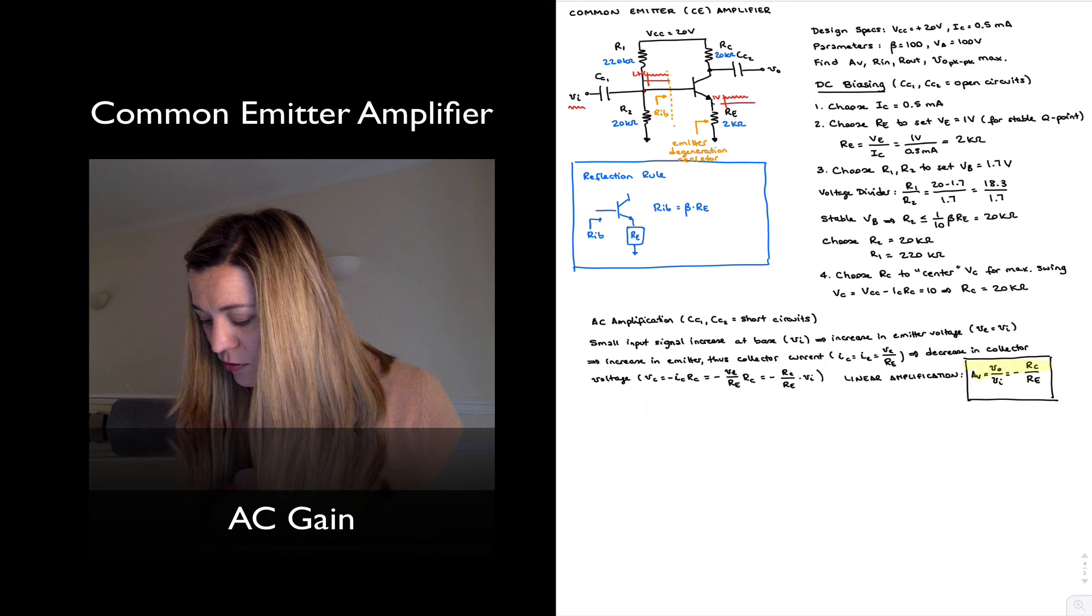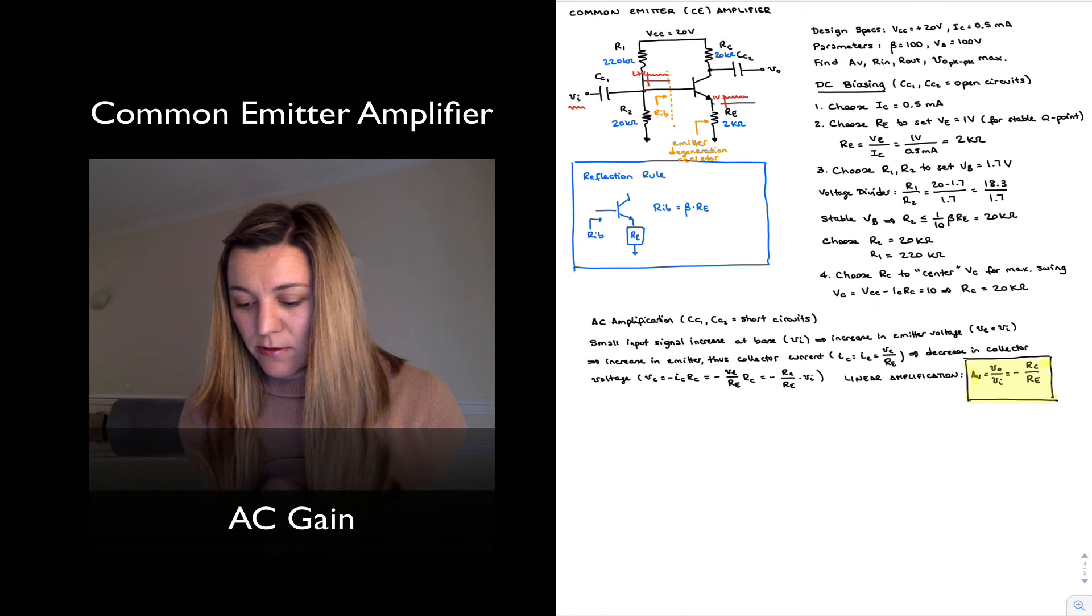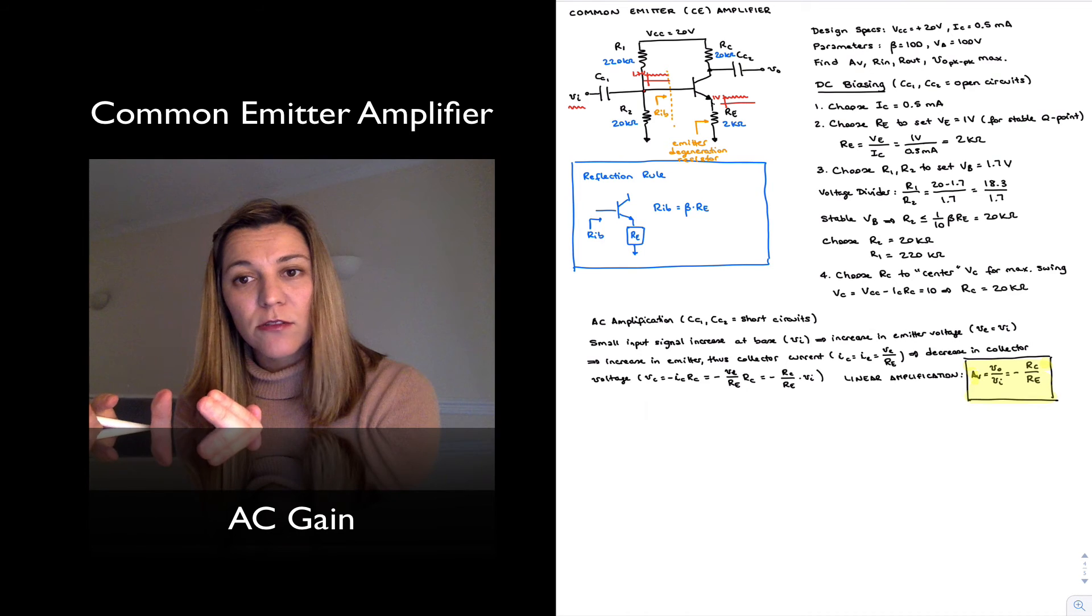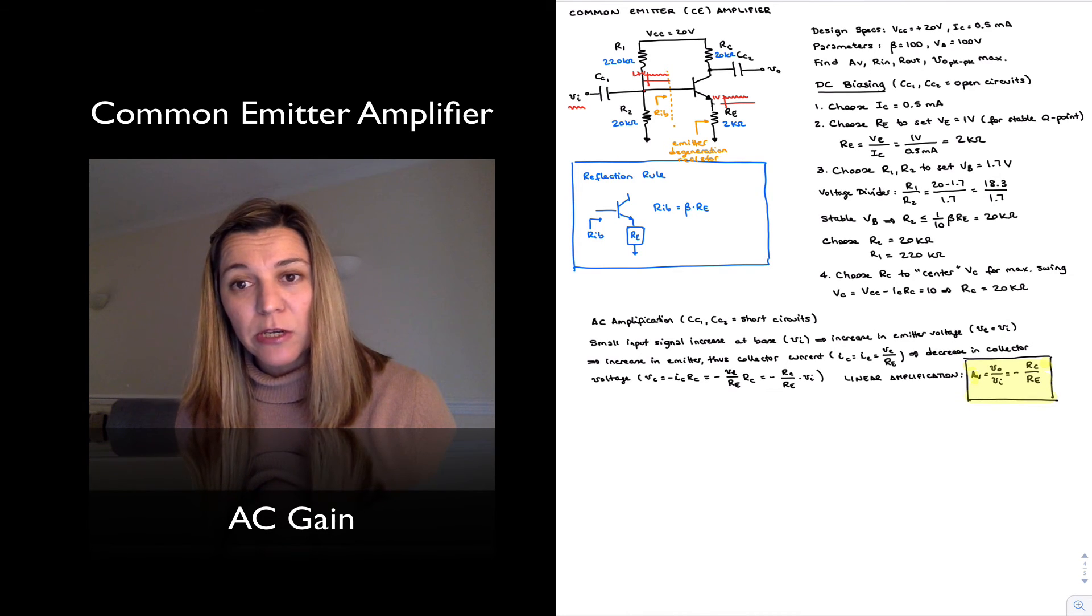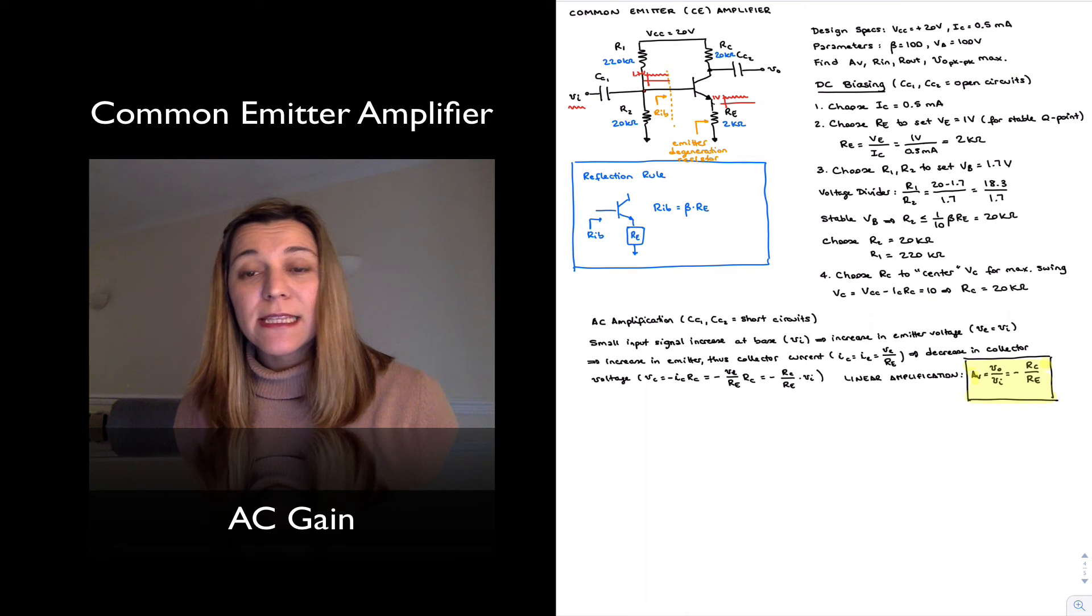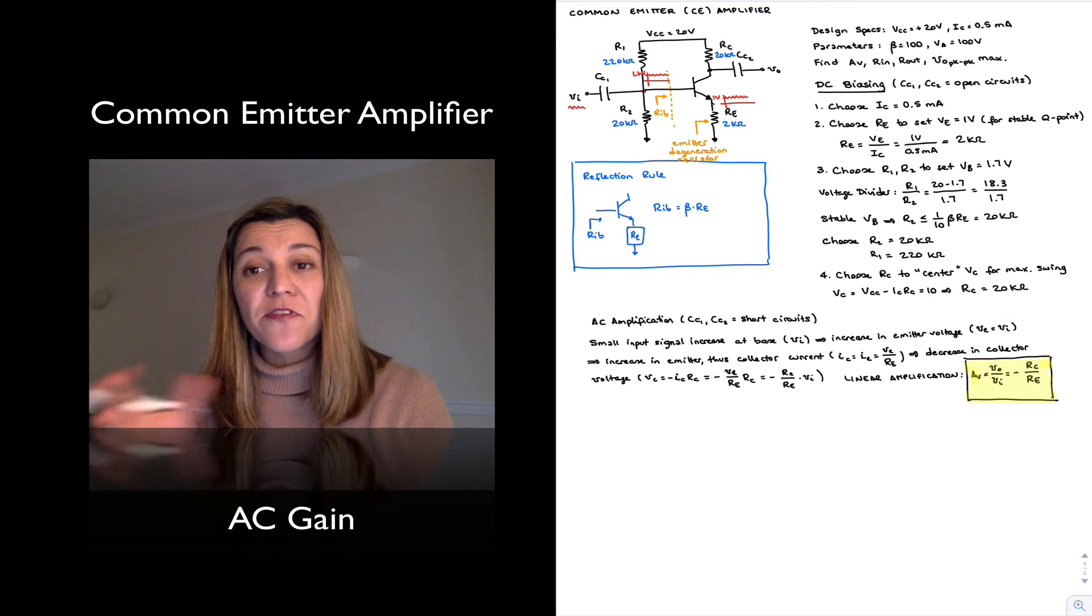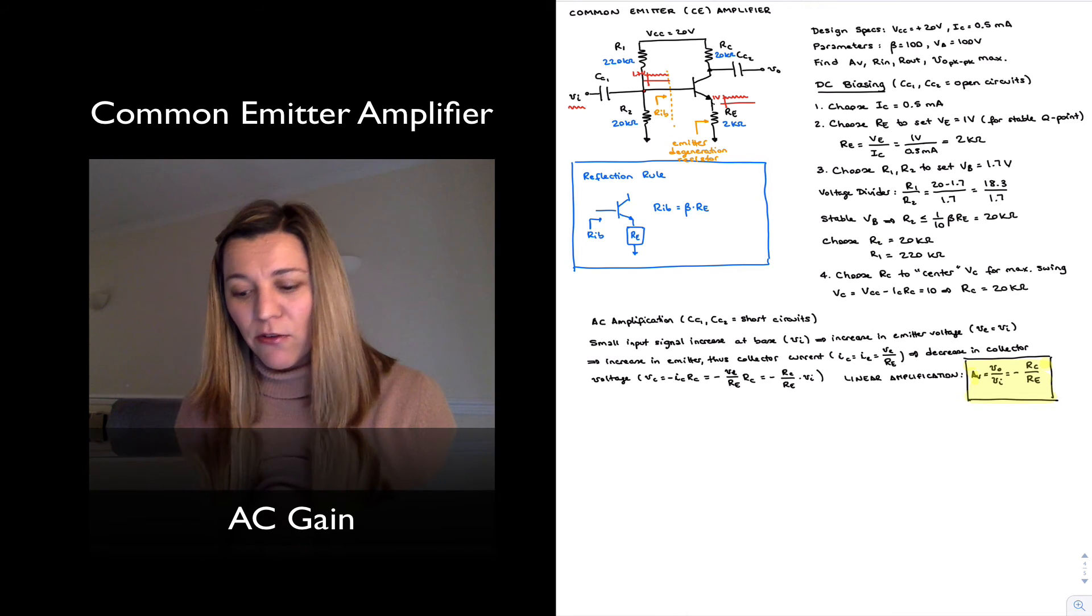Important things to note are, well first, the magnitude of that gain is equal to the ratio of the overall resistance connected to the collector divided by the overall resistance connected to the emitter terminals. As well as, it is negative, meaning the output, the changing output voltage is inverted with respect to the changing input voltage, which means I have an inverting voltage amplifier.